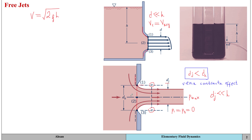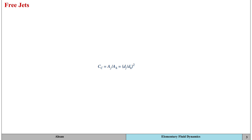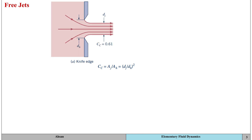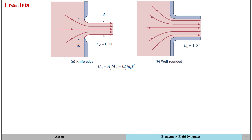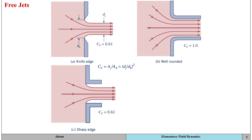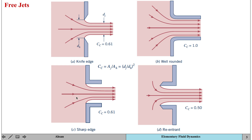An important question is what the vena contracta effect looks like for different types of geometries. The vena contracta effect is a function of the geometry of the outlet or nozzle. The contraction coefficient, Cc, is obtained experimentally and is a ratio of areas: Cc = Aj / Ah, where Aj is the area of the jet at the vena contracta and Ah is the area of the hole. The closer Cc is to 1, the more well-rounded the geometry is going to be.